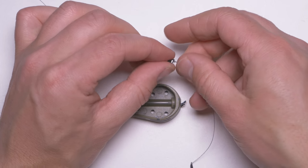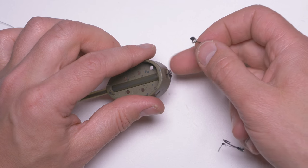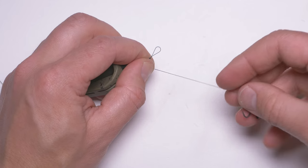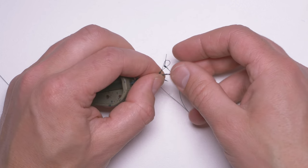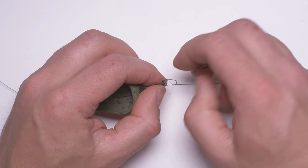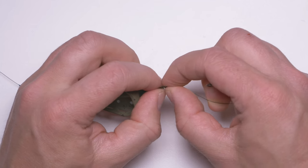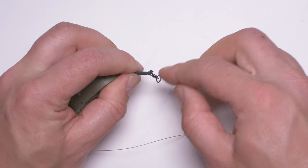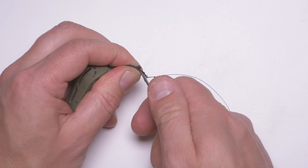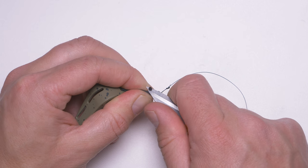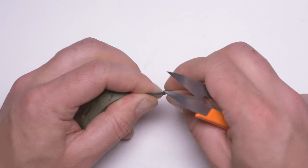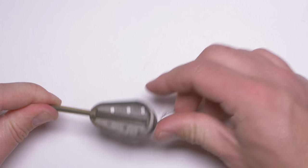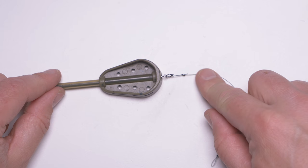Now let's take our hook link and attach it to this little ring using a loop-to-loop connection again. I will make this tag end even shorter because it seems to be getting in the way a little bit. Let's try now—now it's much better.